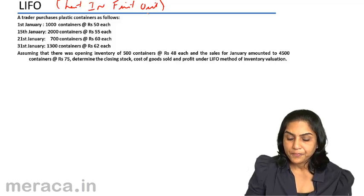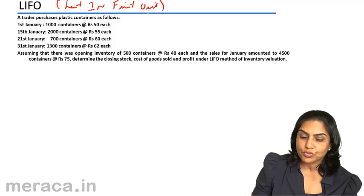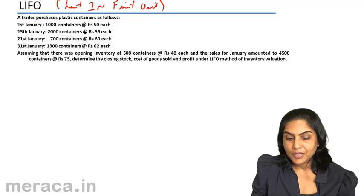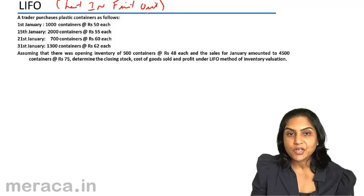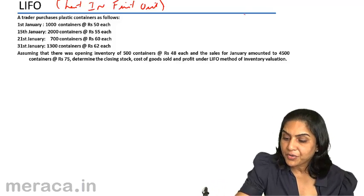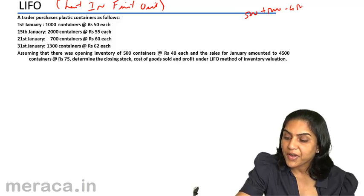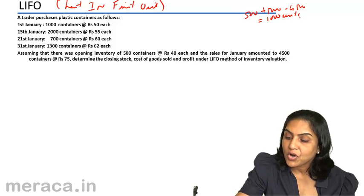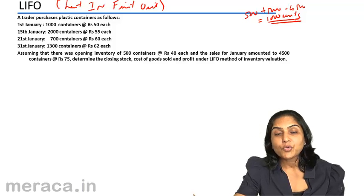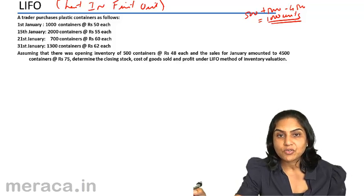Therefore, in this example also, we would have a closing inventory of 1,000 units. Since we purchased 5,000 units and had an opening inventory of 500 units, and we sold 4,500 units, we are talking of a closing stock of 1,000 units. What would be the value of these 1,000 units?